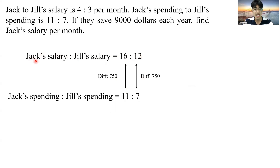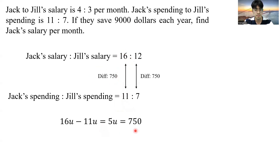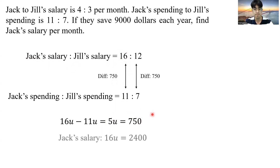Now Jack's salary to Joe's salary is 16 to 12. From there, it is quite obvious that 5 units of money — the difference between 16 and 11 — is just $750. And since we know 5 units is $750, to work out Jack's salary we simply find 16 units of money, which is just $2,400. And that solves the first problem.